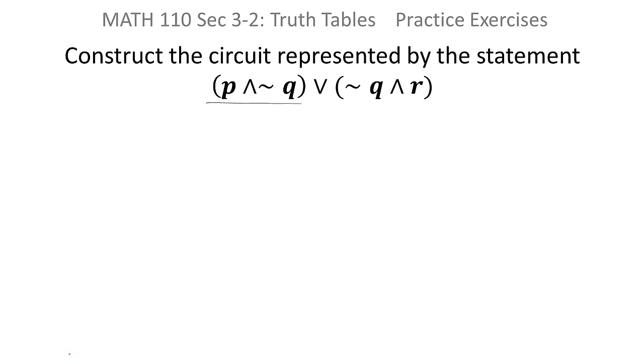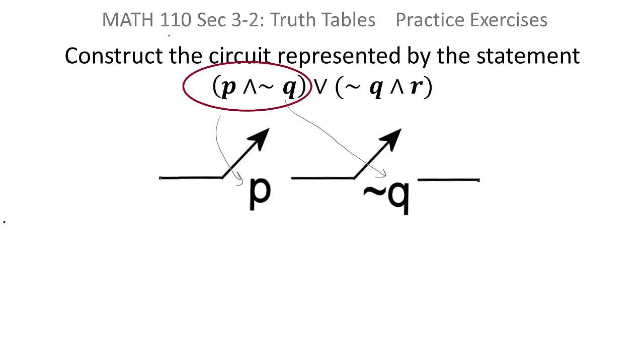If you look at the first piece, that's an AND. You're ANDing the P with the NOT Q. Since it's an AND, it's a series circuit, and they're on the same level.